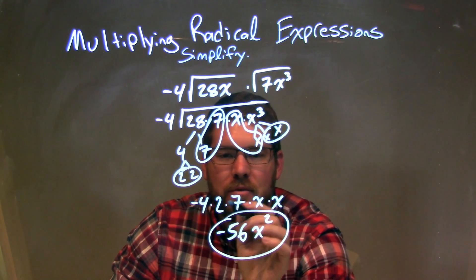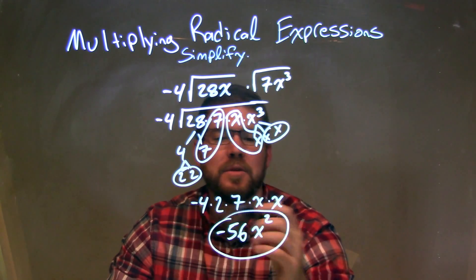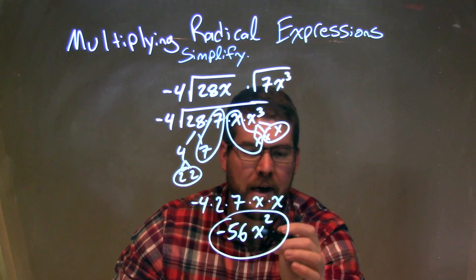So we're left with negative 4 times 2 times 7 times x times x. Simplify that to get our final answer here, which is just negative 56x squared.